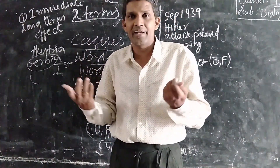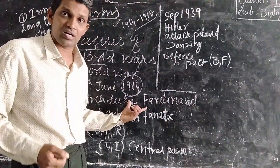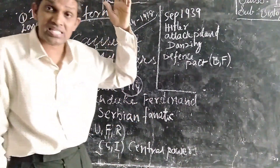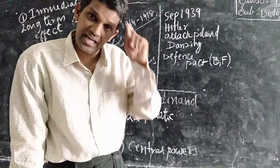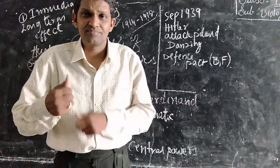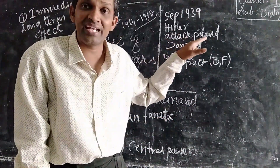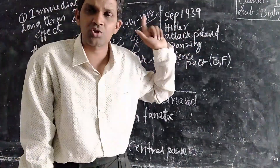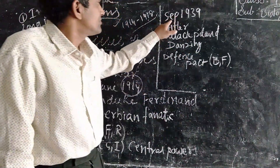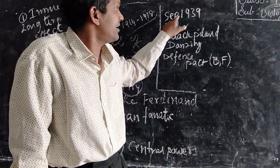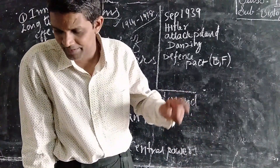Now we are going to learn about the causes of the Second World War. Germany is once again playing a main role. The ruler of Germany at that time was Hitler. Hitler played an important role in leading the Germans towards the Second World War. The Second World War was started in September 1939 — September 1st, 1939.